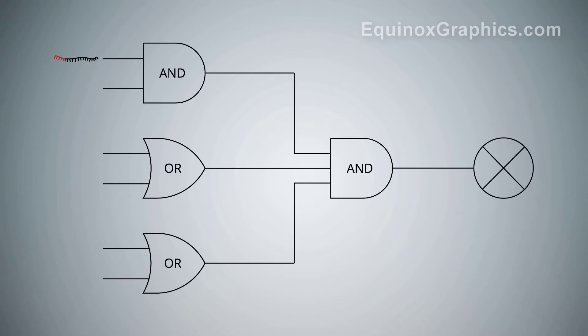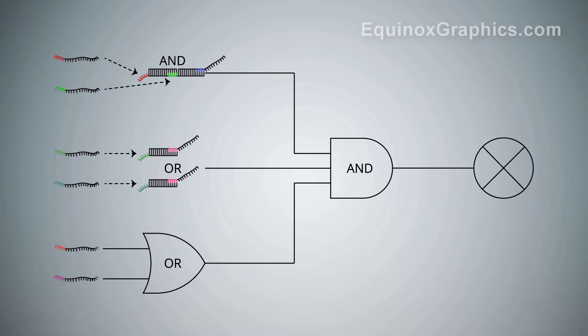Because single strands are used as both inputs and outputs to this system, the output from one circuit can be used as the input to another so that scalable circuits can be created. In theory, the rules of strand displacement can be used to program any logic system that can be expressed as a chemical reaction network.